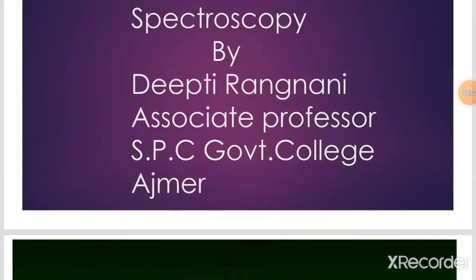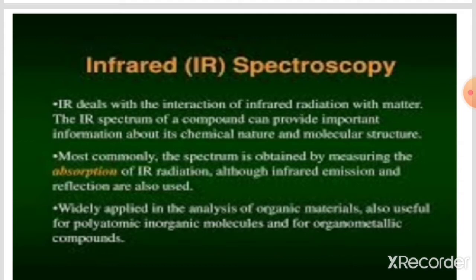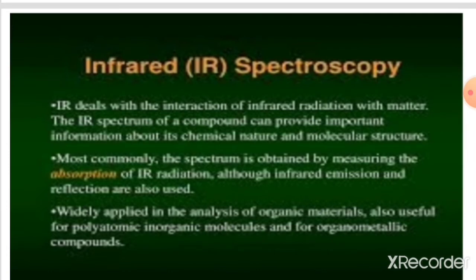Today we will continue spectroscopy and in this series we will study infrared spectroscopy. IR spectroscopy deals with the interaction of infrared radiation with matter. The IR spectrum of a compound can provide important information about the chemical nature and molecular structure. Most commonly, the spectrum is obtained by measuring the absorption of IR radiation, although infrared emission and reflection are also used. It is widely applied in the analysis of organic materials, also useful for polyatomic inorganic molecules and organometallic compounds.